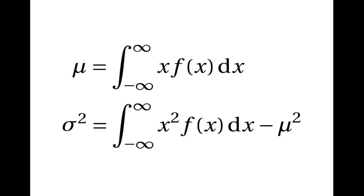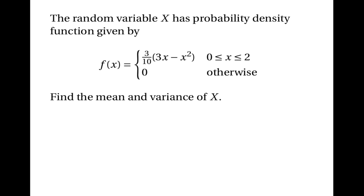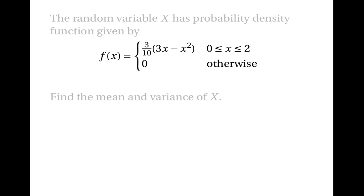To summarise: the mean is the integral of x·f(x) over all possible values of x, and the variance is the integral of x²·f(x) over all possible values of x, minus the square of the mean. Now let's look at some examples. Suppose we have a random variable with probability density function f(x) = (3/10)(3x − x²) between 0 and 2, and 0 otherwise. Let's find the mean and variance of X.